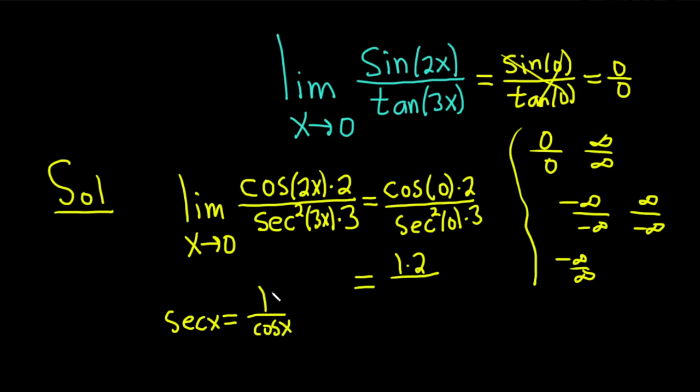So you're going to get 1 over 1, which is 1. You're just going to get 1 squared times 3. You get 1 times 2, which is 2. 1 times 3, which is 3. The answer is 2 over 3.